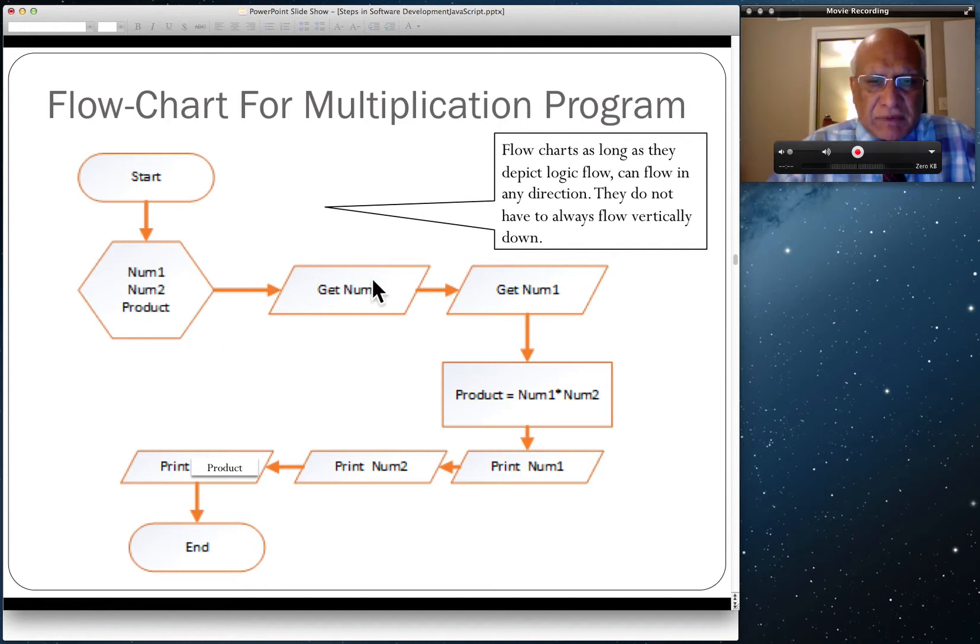Then we prompt the user to get Number 1 from them, Num1, and it will be stored in the memory location Num1. Then we prompt the user to get Num2. This should be Num2, not Num1 again—I copied and pasted and didn't change that. So this should actually be Num2.